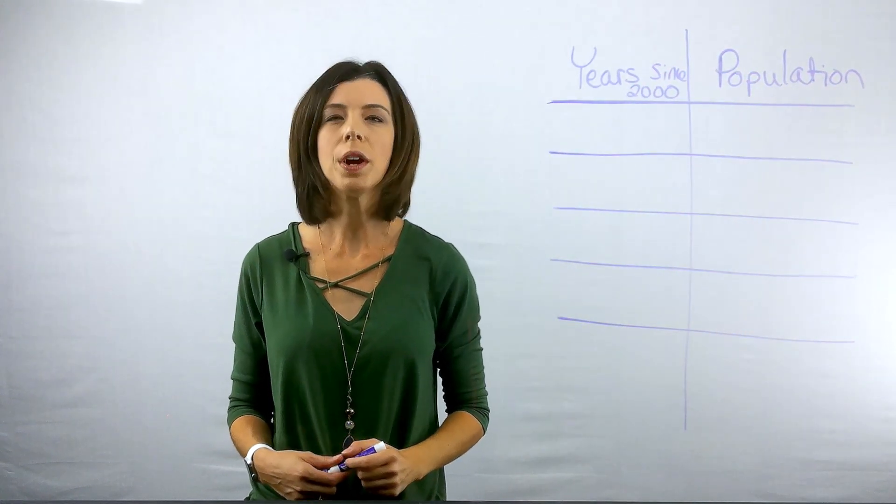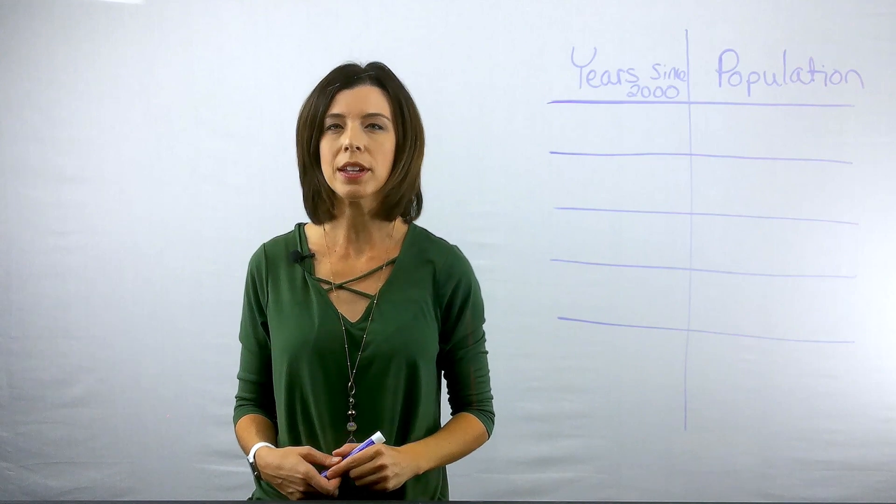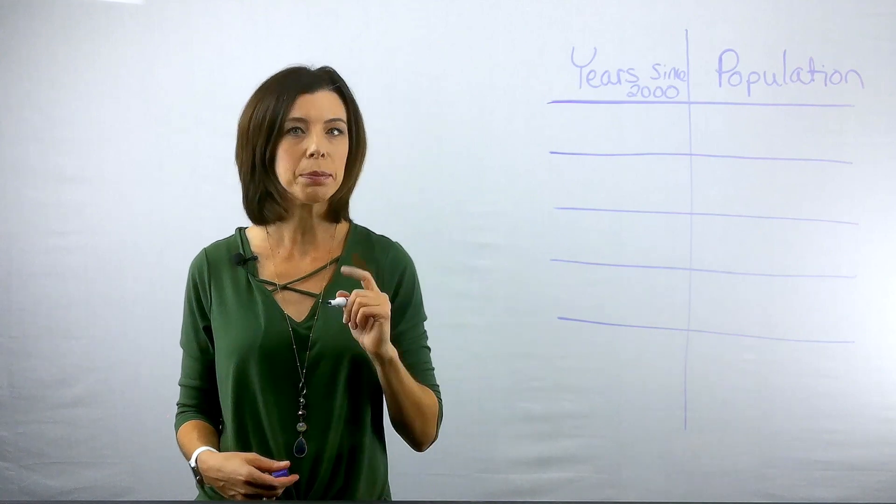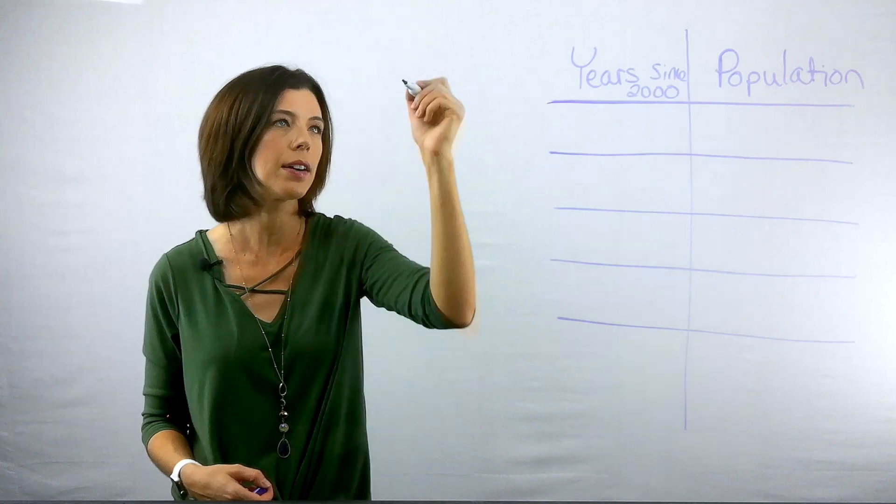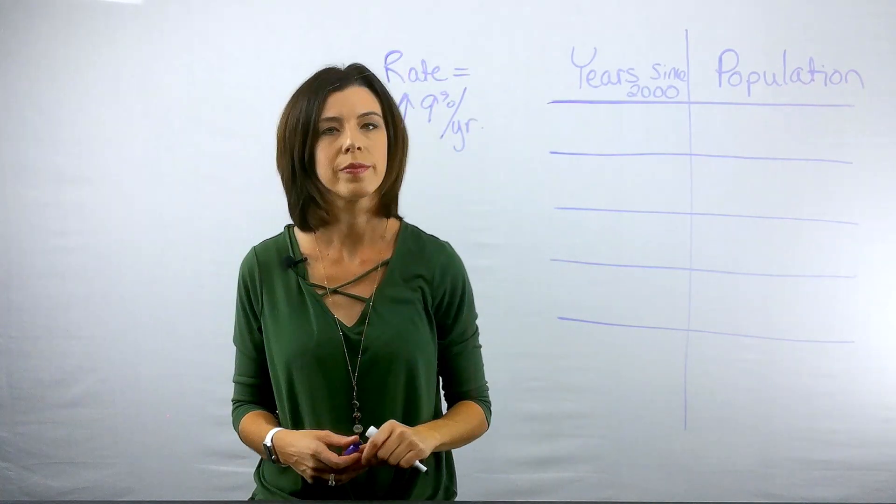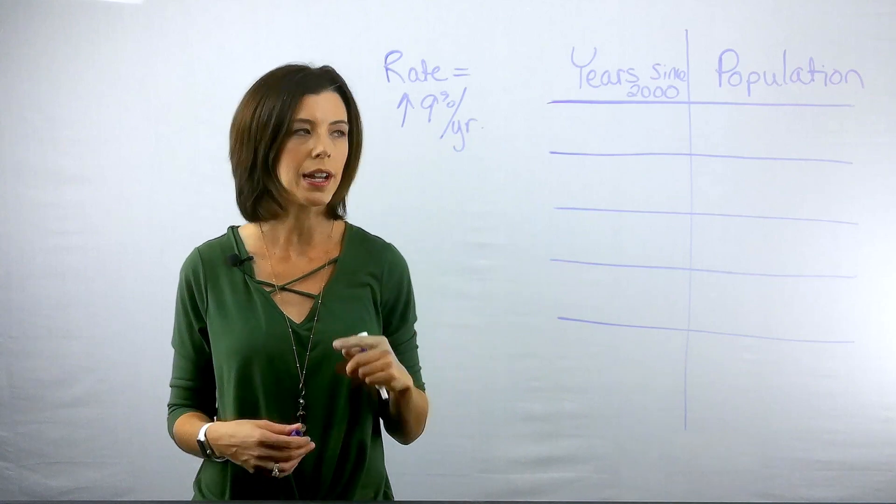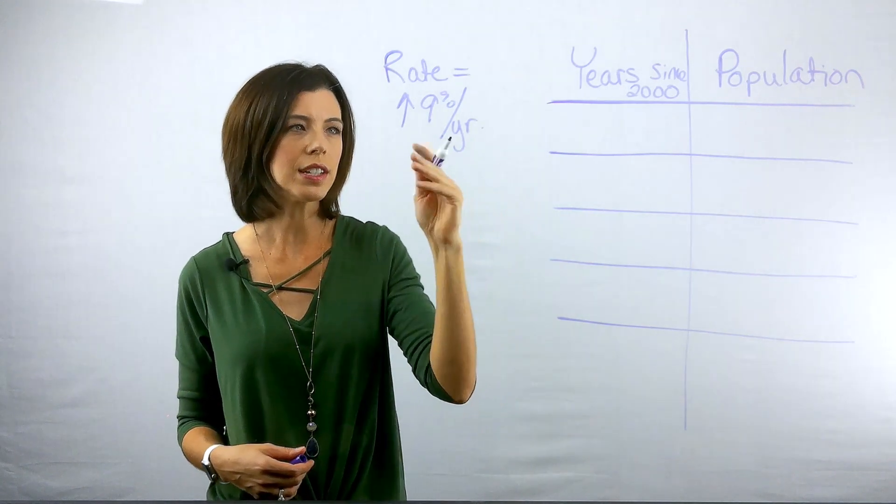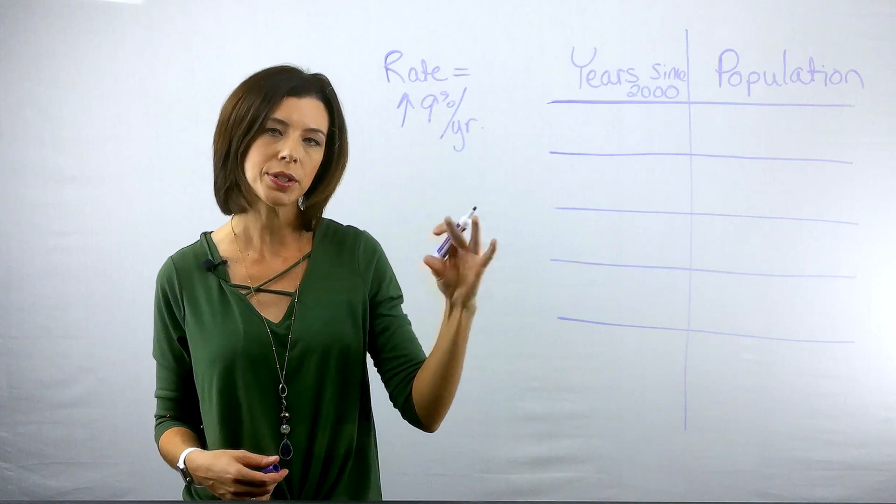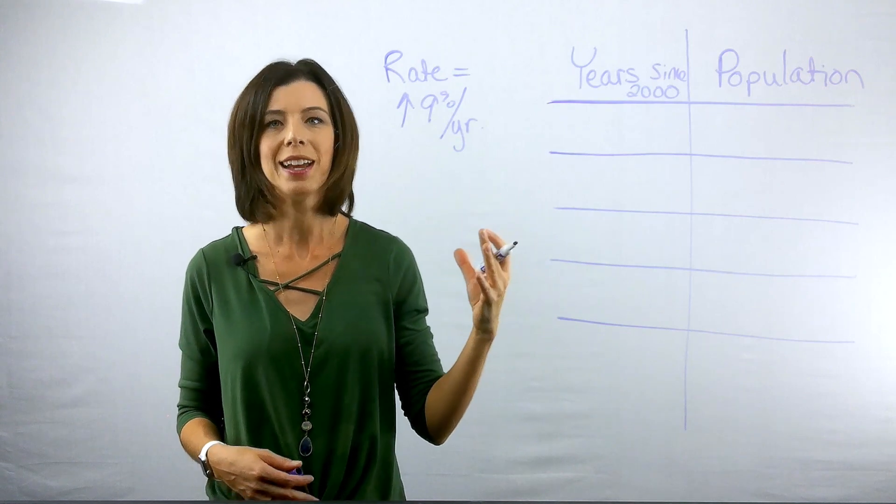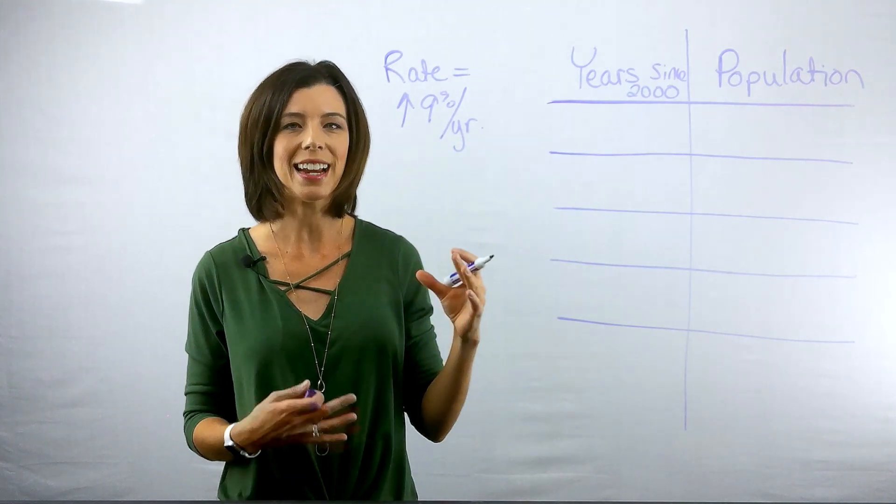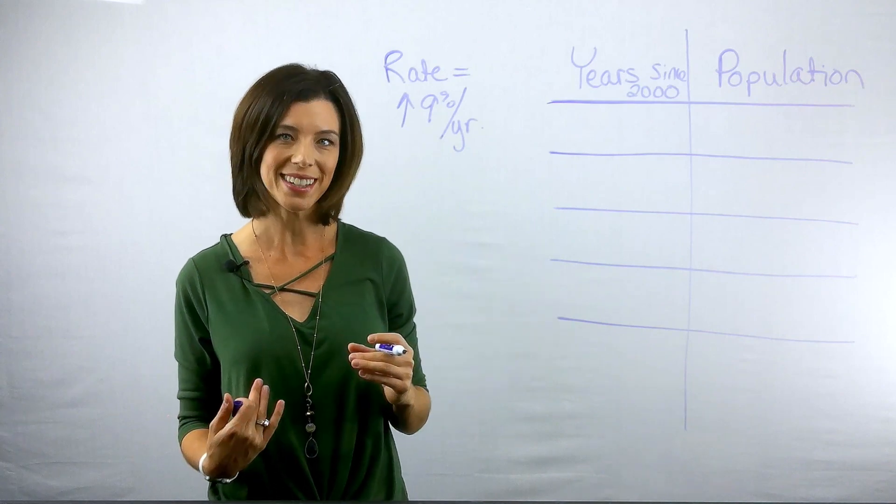First, I want to think about what is my rate. The problem tells me that it's growing at a rate of 9% each year, I'm going to write that down. So if I think about just how to find this using my knowledge about general percents, I can actually think of this as every single year, my number is going to increase by 9%. But what makes this tricky is that it's 9% of whatever the previous year was.